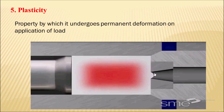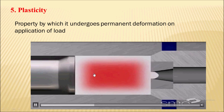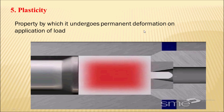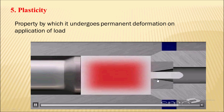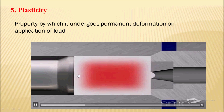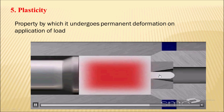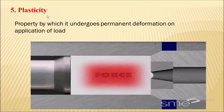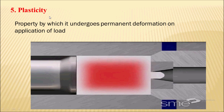Next is plasticity. Because of this property, a material undergoes permanent deformation when a load is applied. This material will not regain its original shape or size — that is plasticity. It is a very important property in the case of forging and rolling processes.